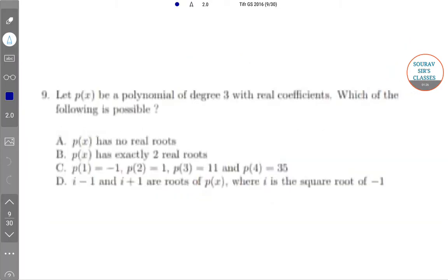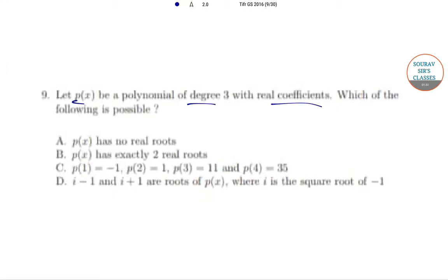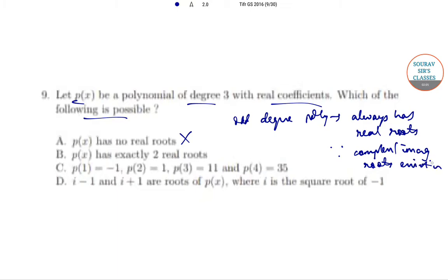The next question is: Let p(x) be a polynomial of degree 3 with real coefficients. Which of the following is possible? Option A: p(x) has no real roots. This is incorrect because an odd degree polynomial always has real roots since complex, or rather imaginary roots, exist in pairs.